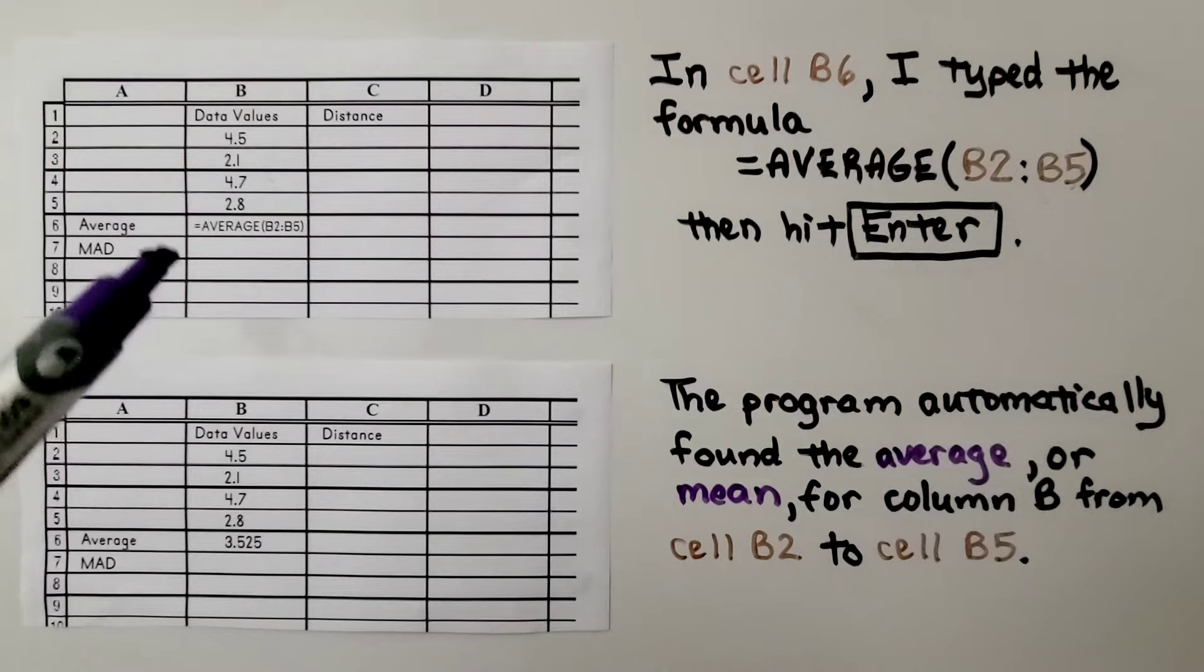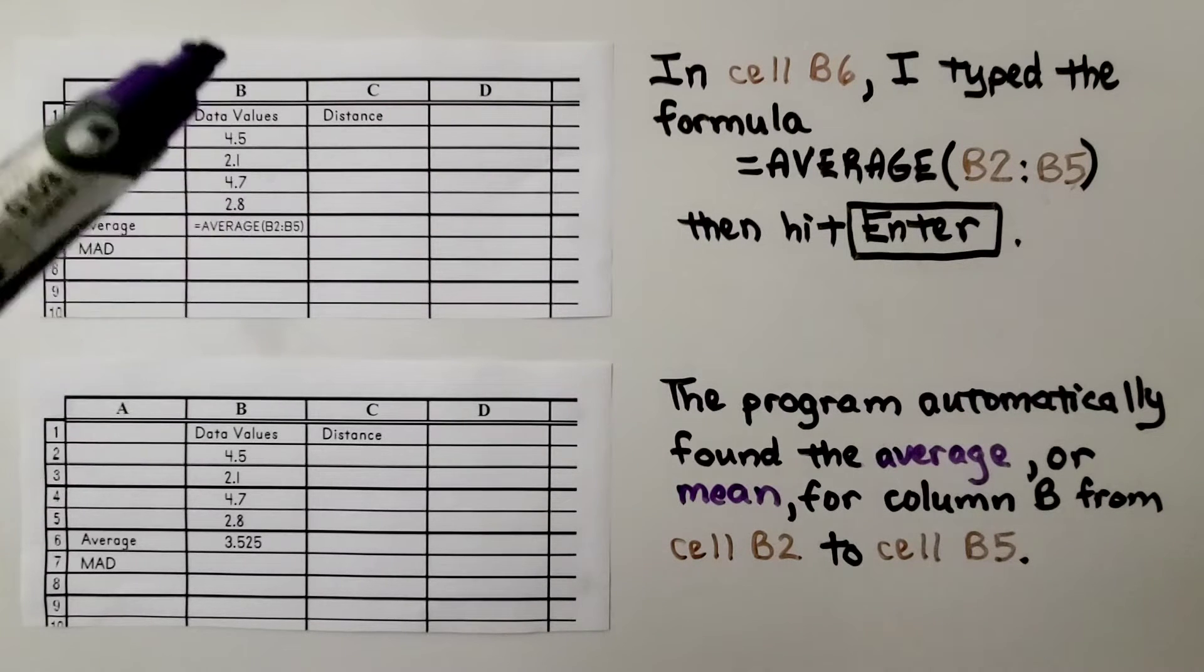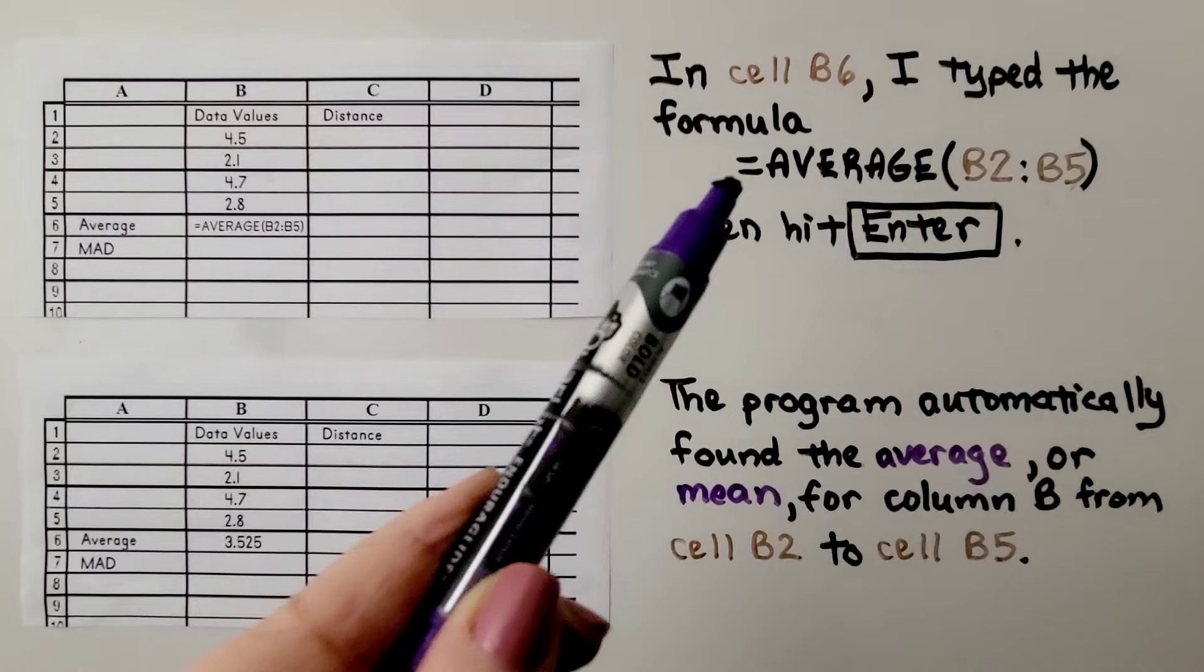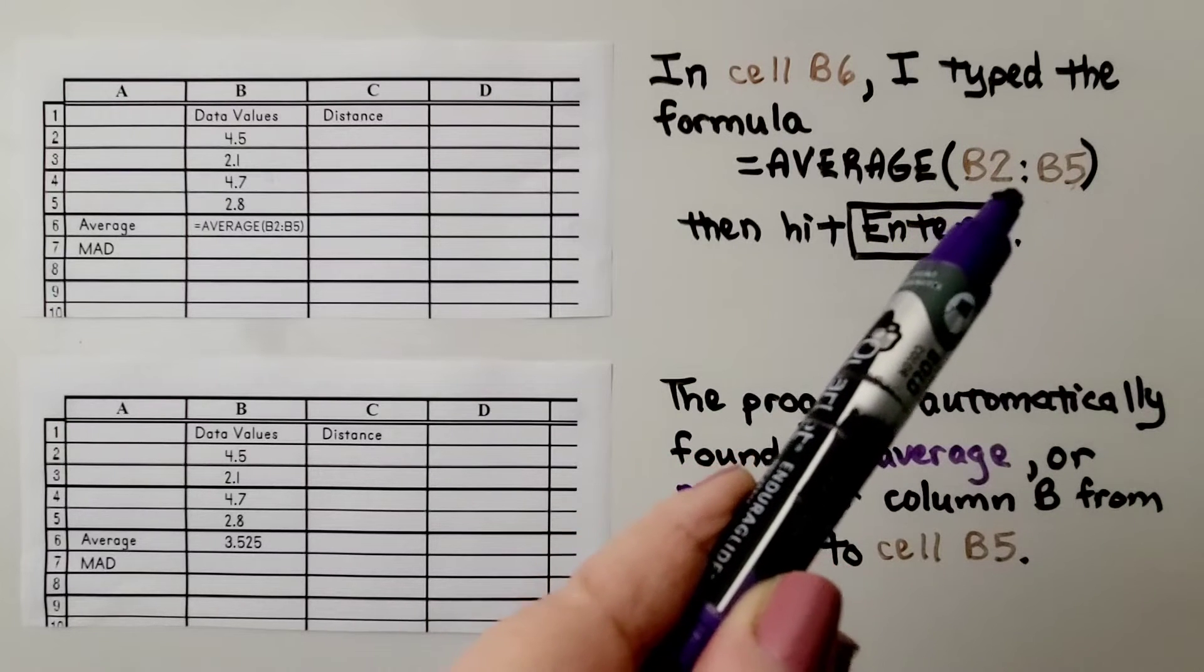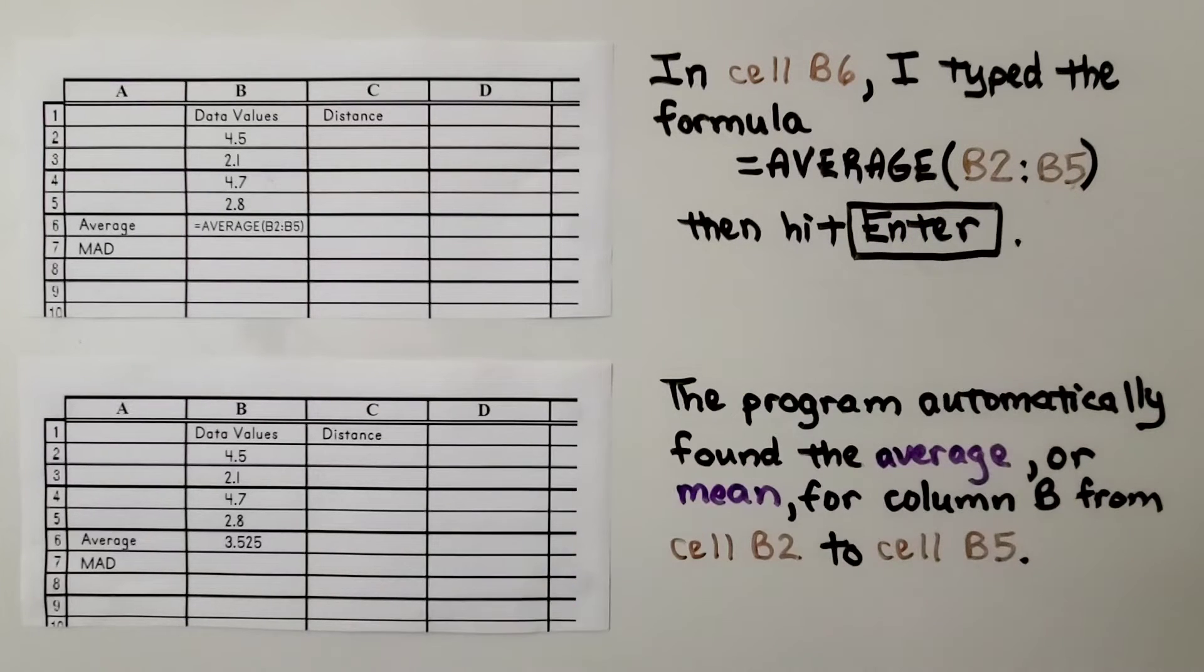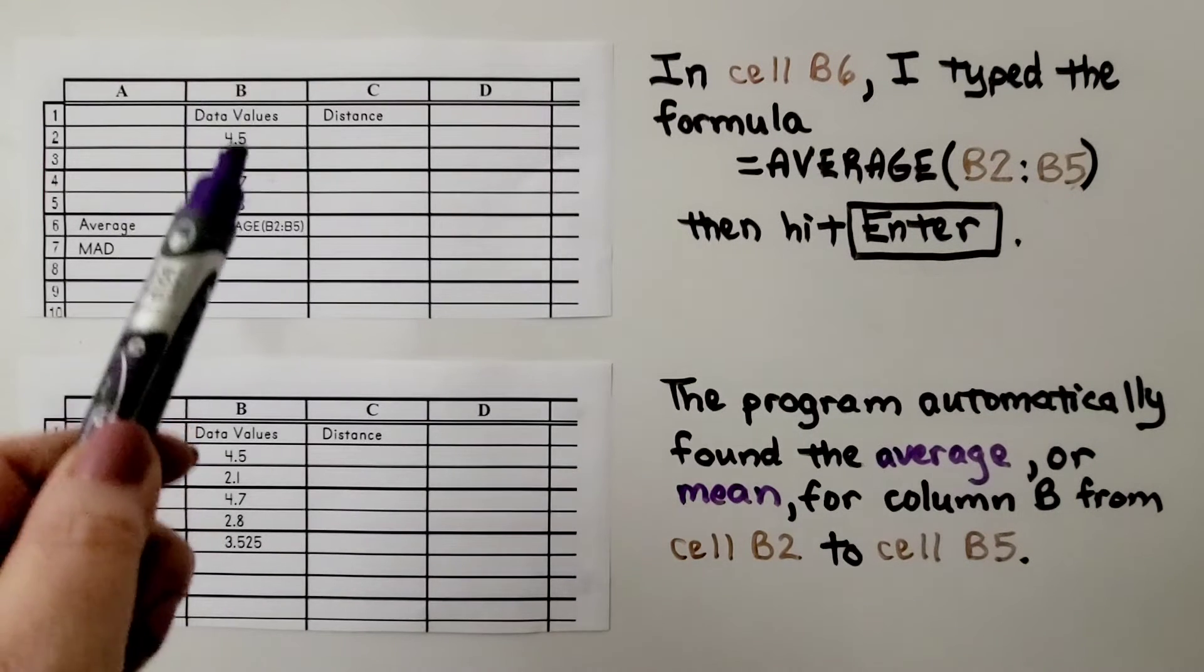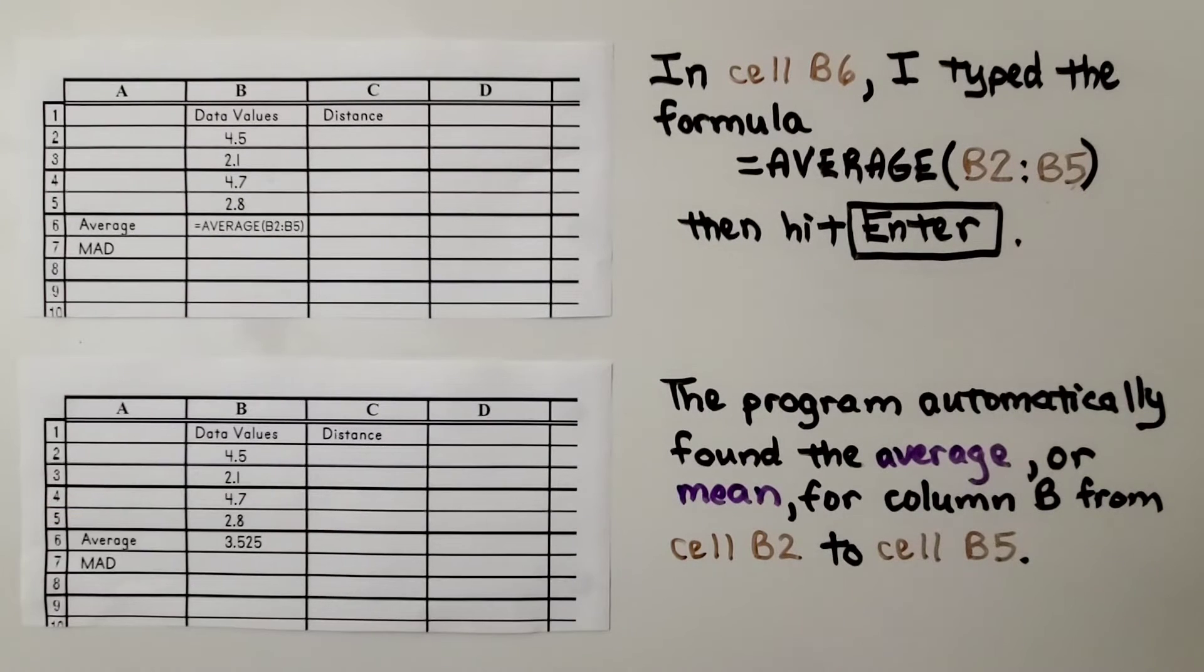So in cell B6, I typed the formula. I put an equal sign, average, parentheses, B2, a colon, and B5. Then I hit enter. So in this cell underneath my data values, I typed in this formula.